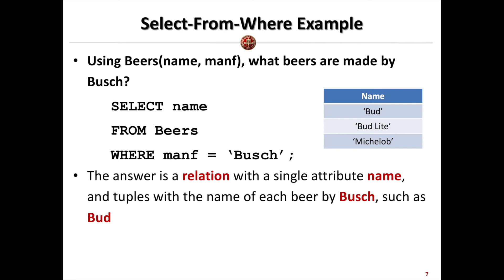Before writing the SQL, I hope you remember we can write this query with relational algebra first. We plan to find the names of the beers, so we are doing projection of name. We have a condition — manufacturer equals to Bush — so we do projection of name, selection where manufacturer equals Bush, on the Beers table. When we translate this relational algebra expression into SELECT-FROM-WHERE, we write: SELECT name FROM Beers WHERE manufacturer = 'Bush'.